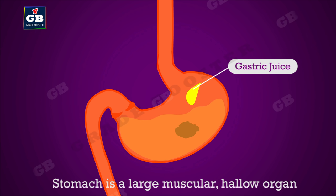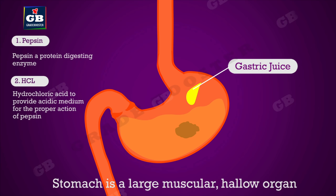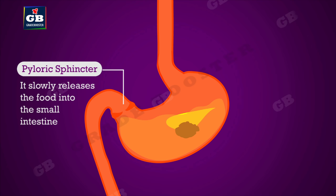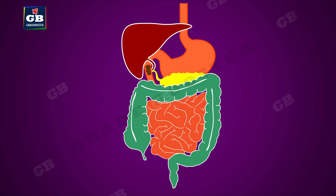The stomach is a large muscular hollow organ in which food is thoroughly mixed with digestive juices secreted by gastric glands in the stomach walls. These juices include: one — pepsin, a protein-digesting enzyme; two — hydrochloric acid, which provides an acidic medium for the proper action of pepsin; and three — mucus, to prevent damage to the stomach wall by HCl. At the end of the stomach, a sphincter muscle slowly releases food into the small intestine.